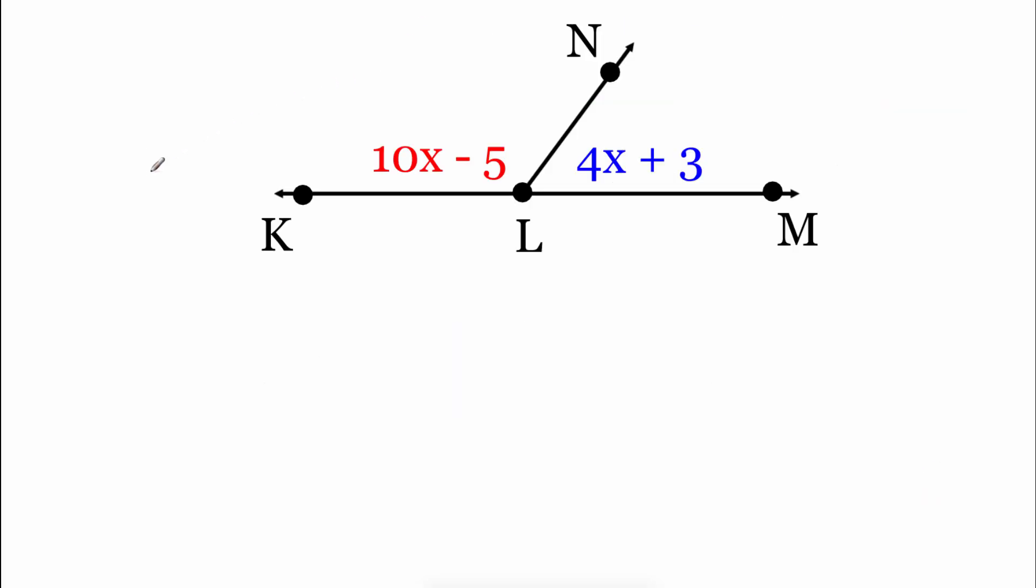As always, feel free to pause the video at any time with these extra examples. Try it out on your own, and then you can come in and check your answers. So on this one, what we're looking at is we've got this KLM big angle, and I'll tell you that that's a straight angle. So if we think about what it means to be a straight angle, that means the measure of angle KLM is 180 degrees. So setting up our angle addition postulate, if we add up the two small measures, it should equal the big measure. So we've got 10x minus 5 plus 4x plus 3. Those are our two small angles. That's got to equal our big angle, which is 180.